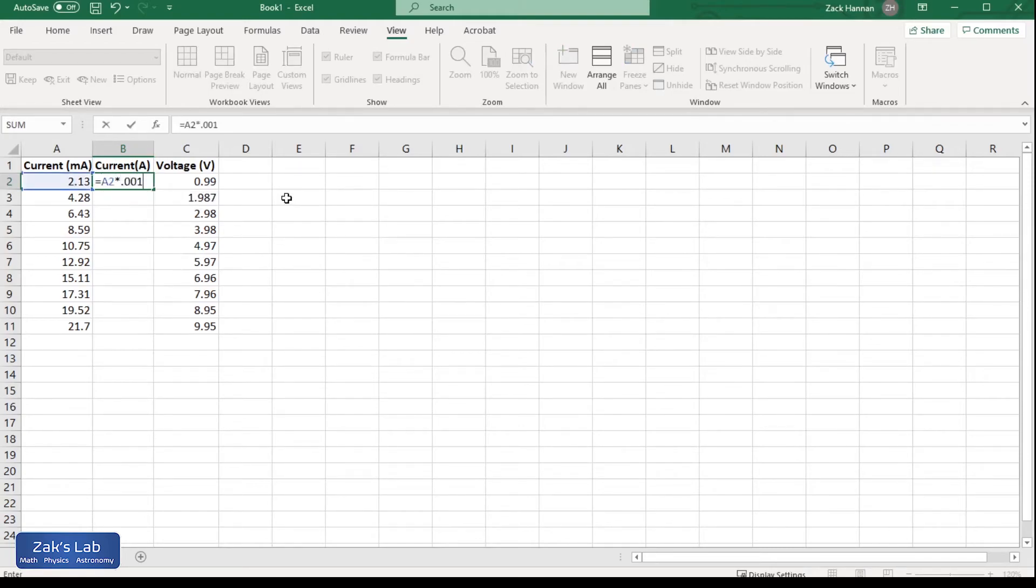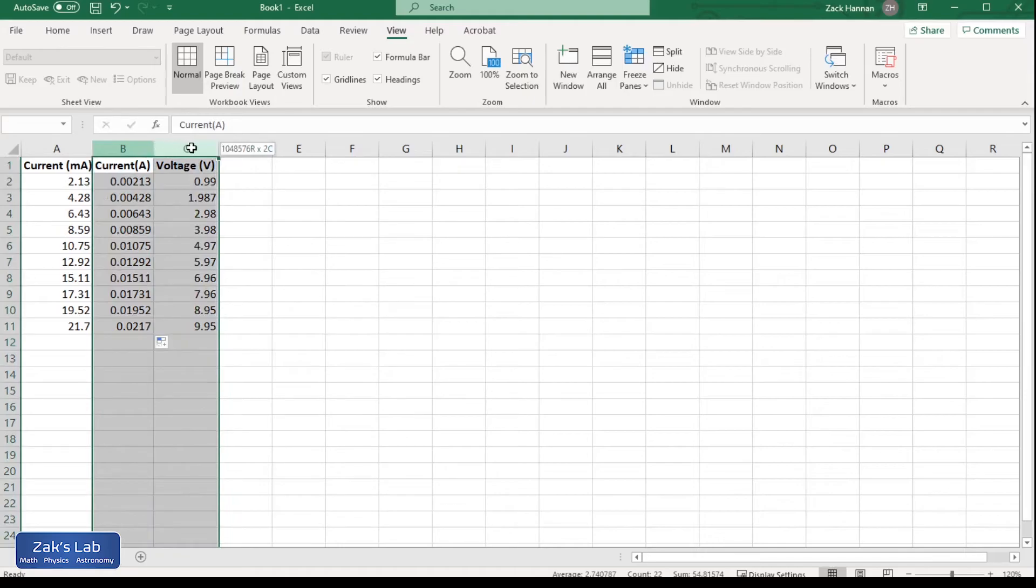Then I corner drag that box to propagate the formula and I have all my currents in amps now. Notice in Excel, whatever you want for your X variable, it has to be the leftmost column, and then your Y variable will be the rightmost column. You highlight both of those.